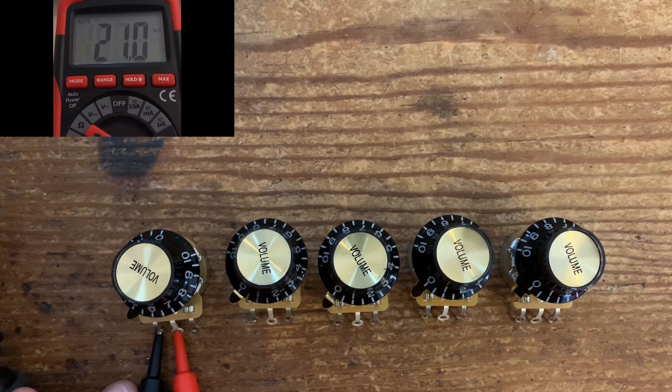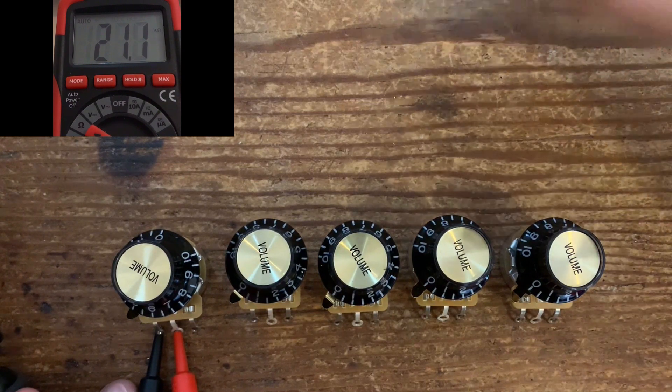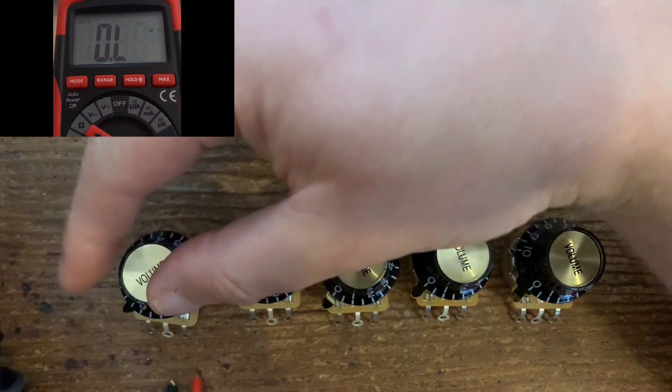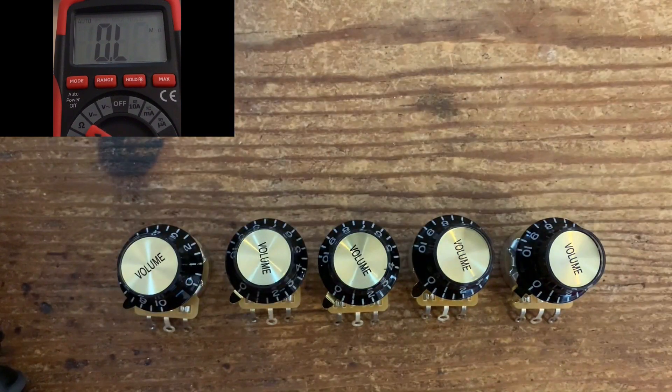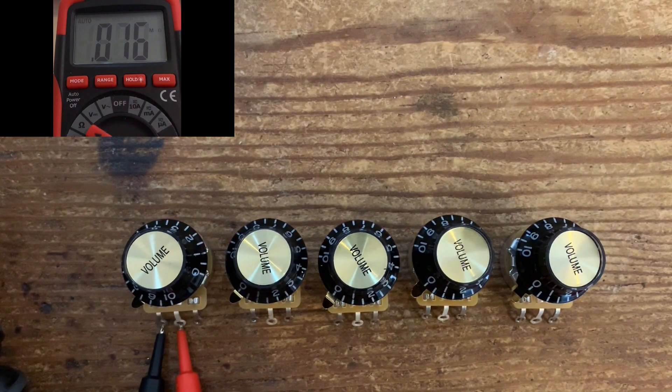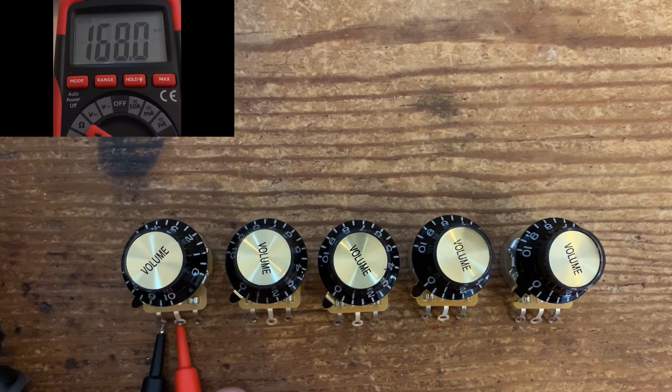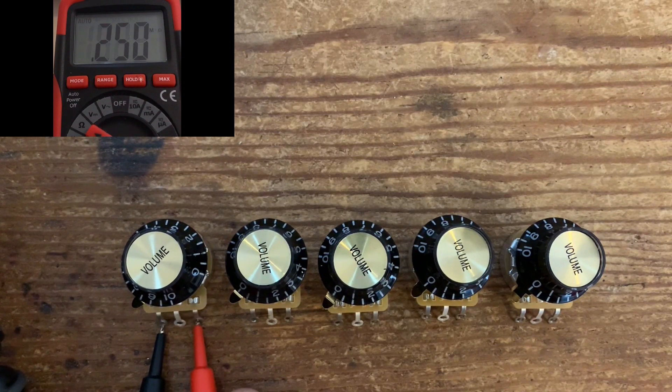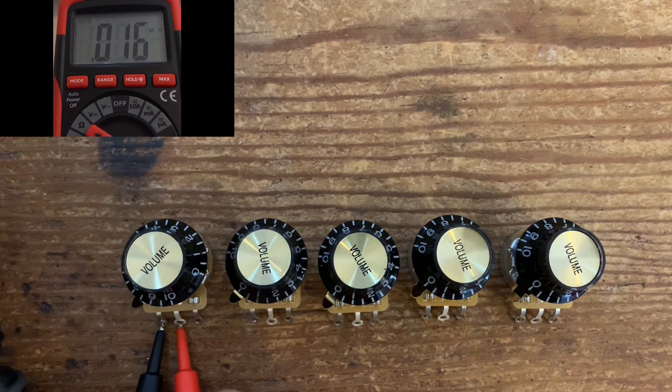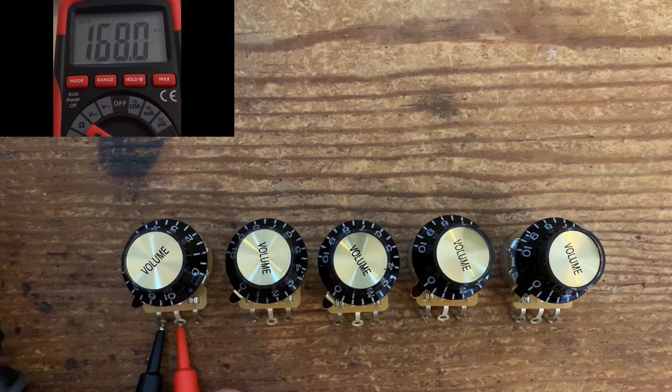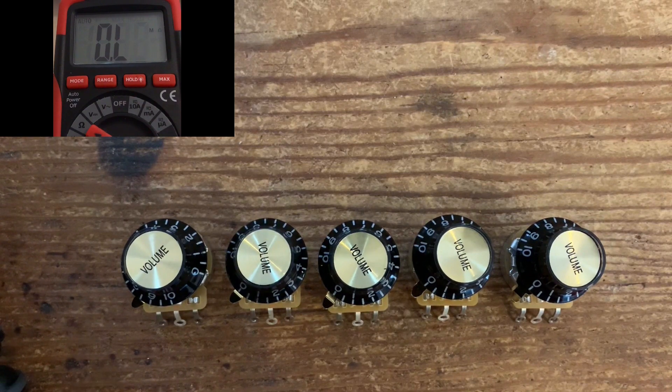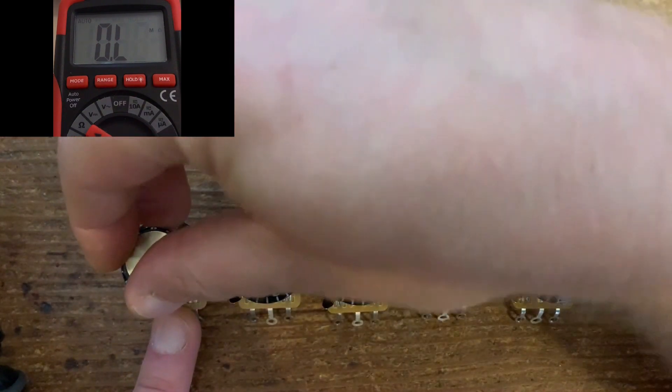To measure the resistance of the pot at a given point during its curve, you simply turn the control knob to whatever setting. I'll turn it up to 8.5 there. Rather than putting the multimeter on the outer lugs, you put it on the middle lug there instead of the outer lug. On the outer lug you get the overall reading, but if you put it on the middle, that gives us a reading of 168.